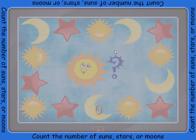Count the number of suns, stars, or moons along the outside. Look at the picture in the middle to see which one to count, then use your blocks to count out how many of that picture are around. Look carefully to make sure you don't miss any, and do not count the picture in the middle.